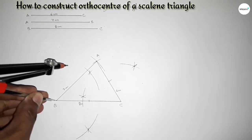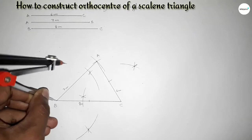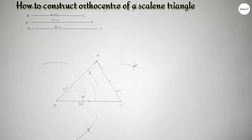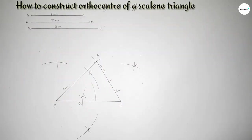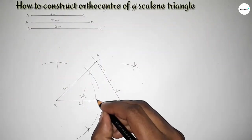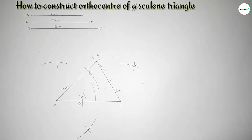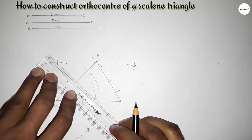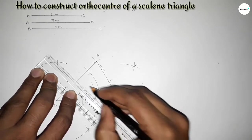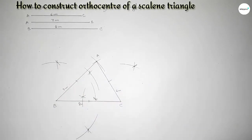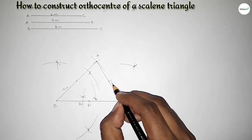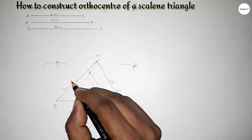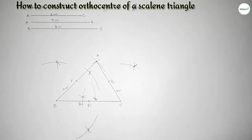Next we have to bisect line AB. Putting the compass here and taking greater than half, drawing arcs above and below. Again with the same length, putting the compass on the other endpoint and cutting arcs. Both curves intersect at two points. Joining them bisects AB at its midpoint. So this is the midpoint of BC — taking point D here; this is the midpoint of AC — taking point E here; and this is the midpoint of AB — taking point F here.